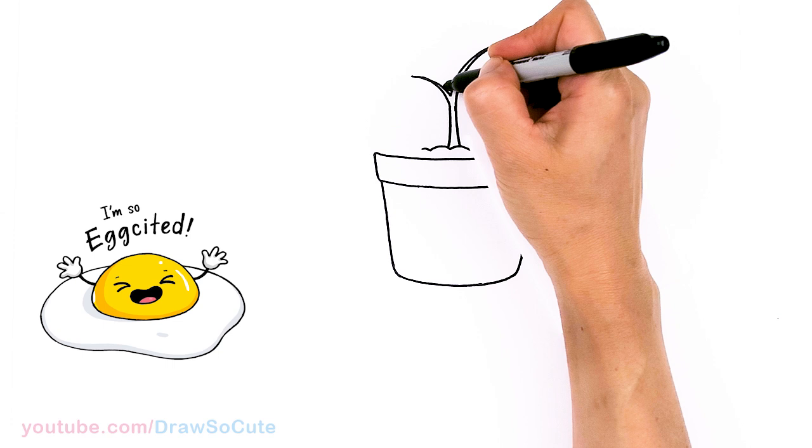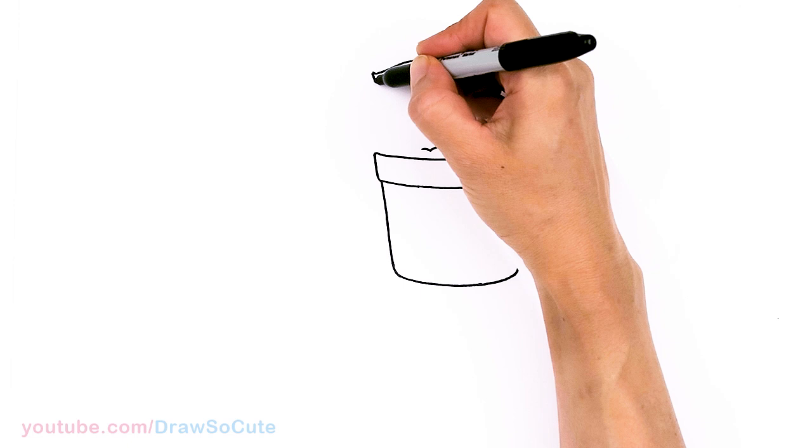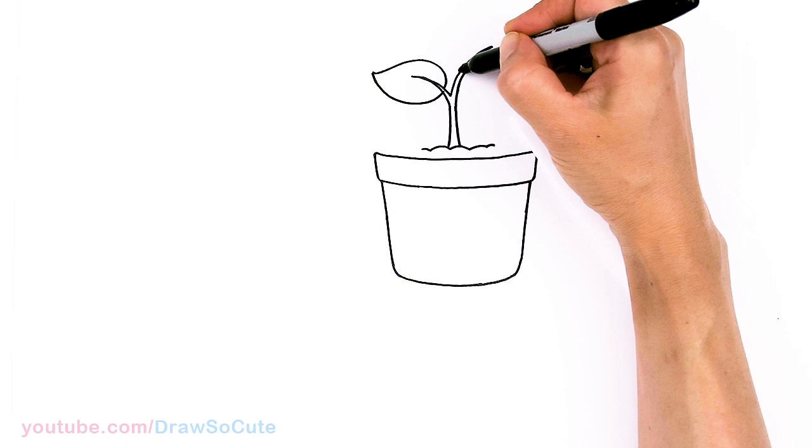And then from there I'm going to add the leaves. So come right here. Since the leaves are the star of this drawing I'm going to make them pretty big. So I'm just going to go around and bring it right back in. And one more.